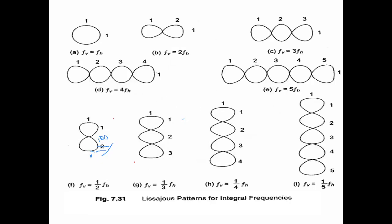Some examples of Lissajous patterns are shown. A circular or ellipse type of representation is obtained on the CRT screen. Depending upon the frequencies of the horizontal and vertical deflection systems, different patterns appear. The detailed explanation of how to measure frequency using Lissajous patterns will be covered in the next class.